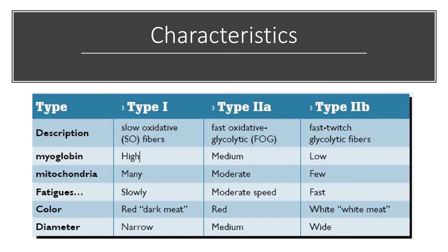That aerobic capacity from type 1 and type 2A allows those muscle fibers to contract for a very long time, whereas type 2B — which is very glycolytic, not very aerobic, but can output a lot of power — will fatigue very fast. In terms of color, red tends to be more associated with those highly aerobic muscle types because of the high myoglobin concentration and oxygenation. Type 1 fibers also have a small cross-sectional area, so their contractions are not as forceful and powerful as type 2 fiber types.